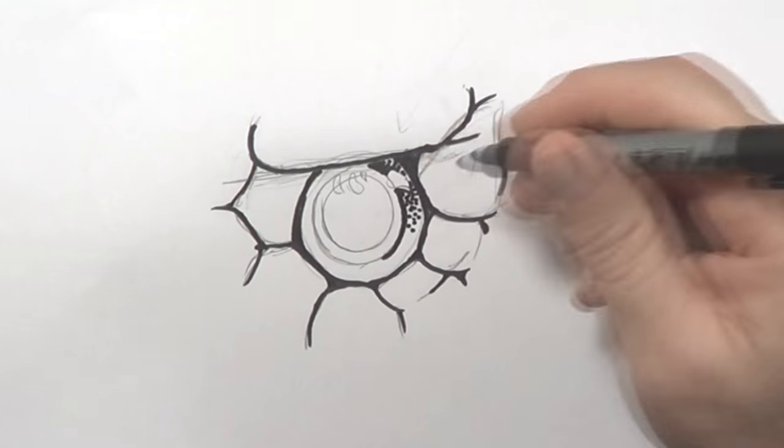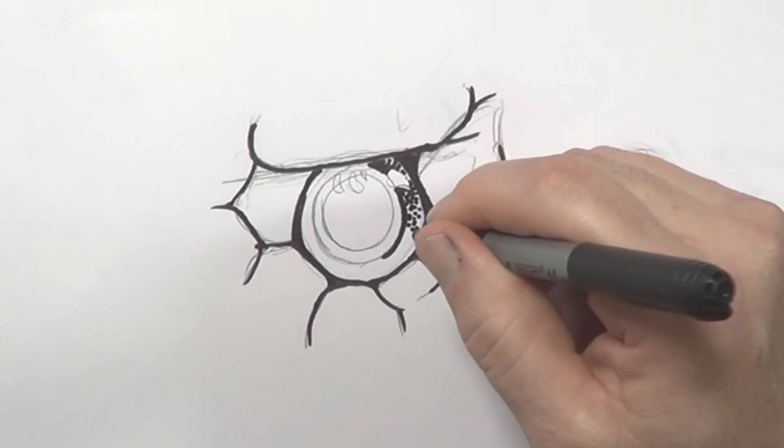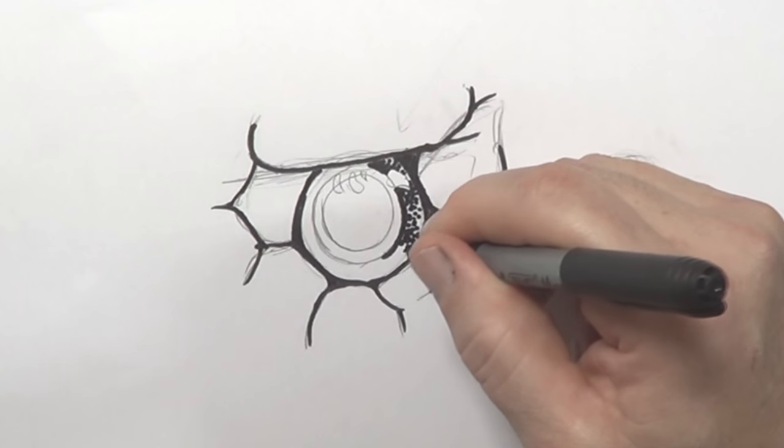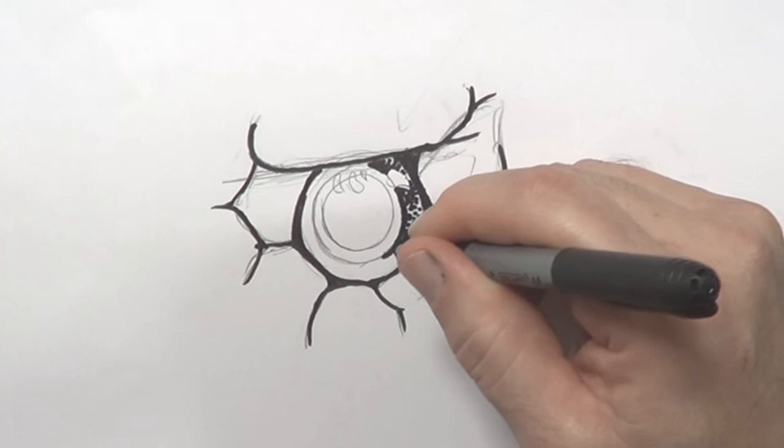Like that. I'm going to make these dots get closer and closer together. Go over them a few times. Until it's just about all black.